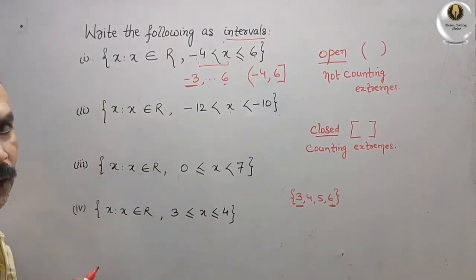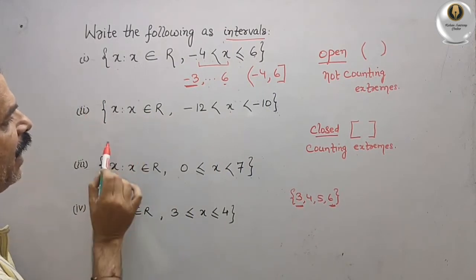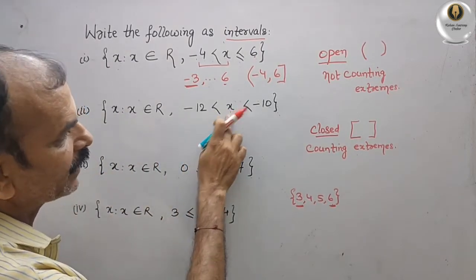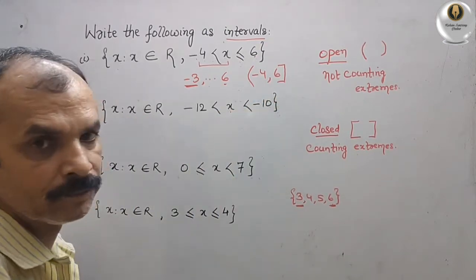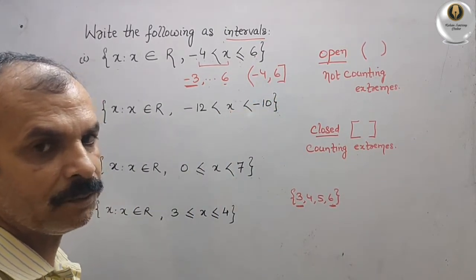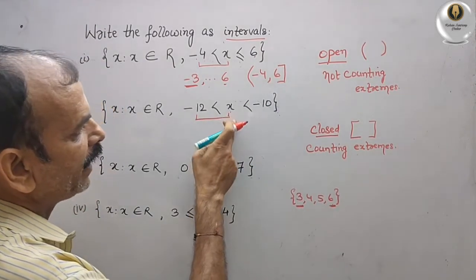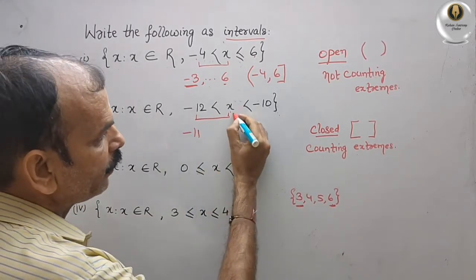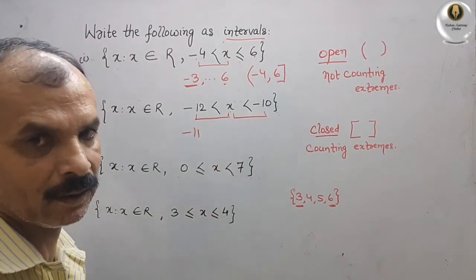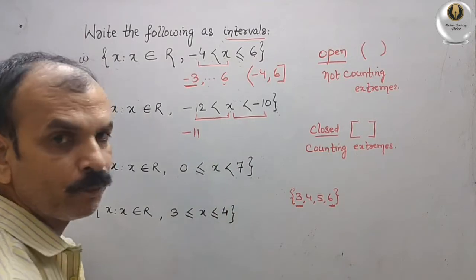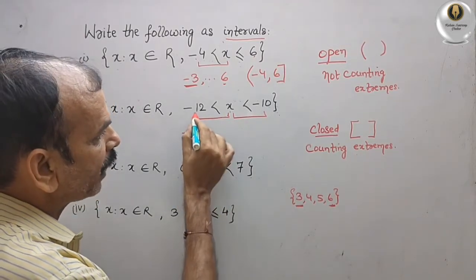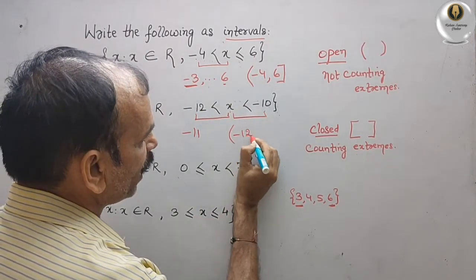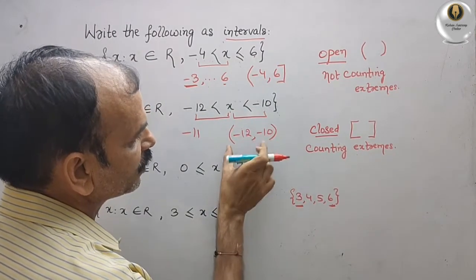In the second question: the set of all x such that x belongs to the real numbers and -12 < x < -10. Here, x should be greater than -12, which gives us -11, and x is less than -10, which again gives only -11. We are not counting -12 or -10, so we write this as (-12, -10) with small brackets on both sides.